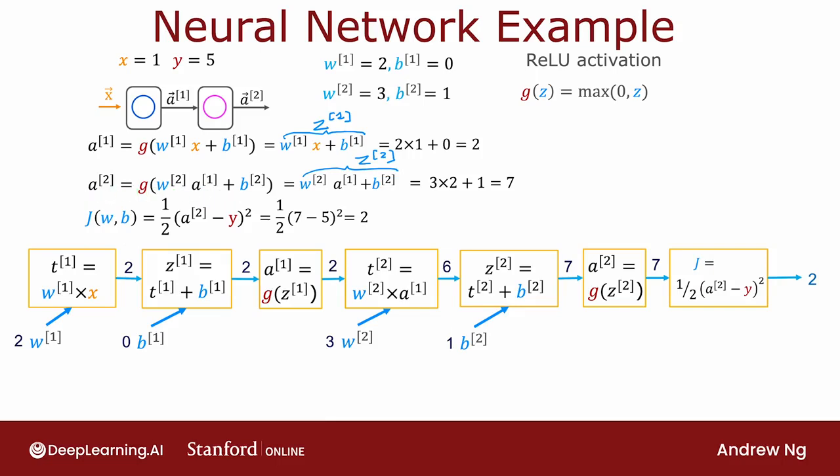So this is how you take the step-by-step computations for larger neural network and write it in a computation graph. You've already seen in the last video the mechanics of how to carry out backprop. I'm not going to go through the step-by-step calculations here. But if you were to carry out backprop, the first thing you do is ask, what is the derivative of the cost function j with respect to a2? And it turns out, if you calculate that, it turns out to be 2. So we'll fill that in here. And the next step will be asked, what's the derivative of the cost j with respect to z2? And using this derivative that we computed previously, you can figure out that this turns out to be 2.